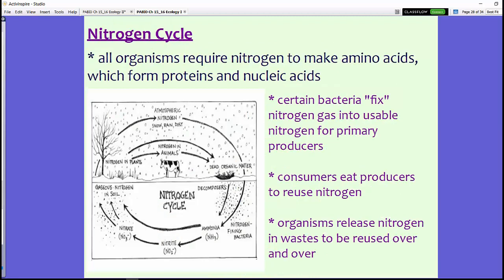The nitrogen cycle is a second nutrient cycle that's pretty important to understand. All organisms require nitrogen to make amino acids, and we know those amino acids are the building blocks of proteins, but nitrogen is also required to create nucleic acids. Nitrogen in the form of a gas is not usable for anything. Nitrogen gas, which is 78% of our atmosphere, is pretty unusable.